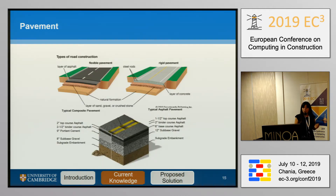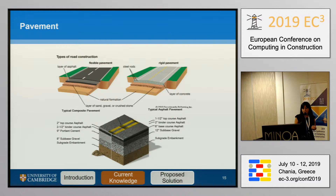For pavement, there are two main categories: asphalt pavement and concrete pavement, and of course a third category — the composite, which has both asphalt and concrete layers. Since pavement defects are mostly influenced by the material, either asphalt or concrete, I suggest dividing pavement into just two subcategories — asphalt and concrete — without the composite pavement.